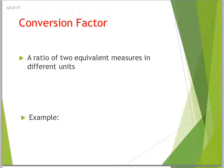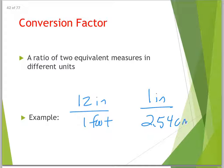Conversion factor: a ratio of two equivalent measures in different units. In other words, something like 12 inches in one foot. That's a conversion factor. Oftentimes, we use them for metric. So if you had something like inches to centimeters, you might say one inch to 2.54 centimeters.